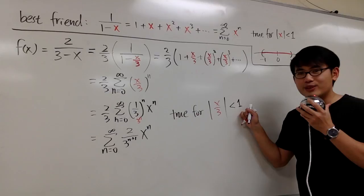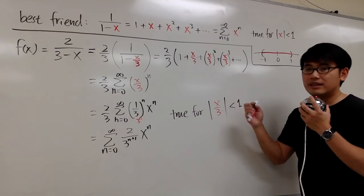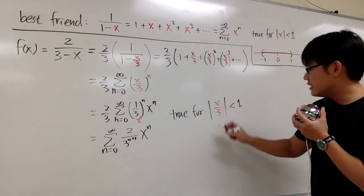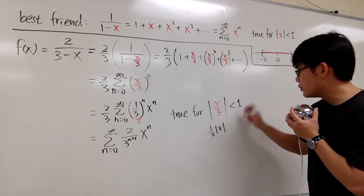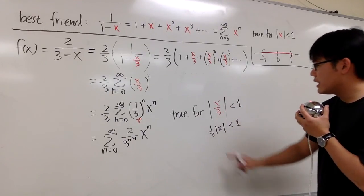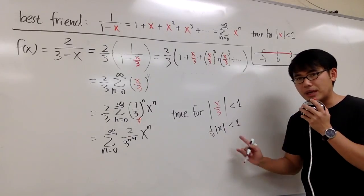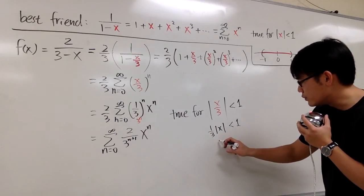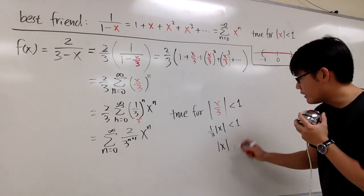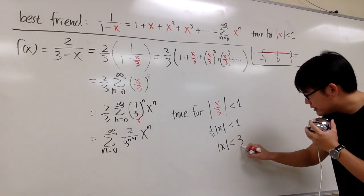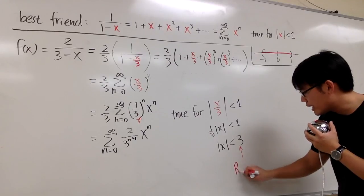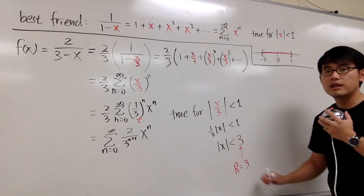The 1 is not a radius of convergence, though. So we have to isolate the absolute value of x. This is the same as saying 1/3 times the absolute value of x, which is less than 1. By looking at this, we can multiply both sides by 3. So we see that we have the absolute value of x is less than 3. And by looking at this inequality, we know that the radius of convergence is equal to 3.